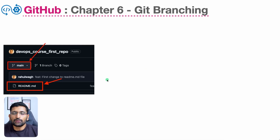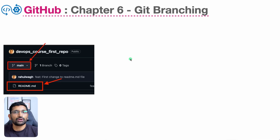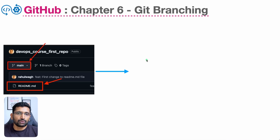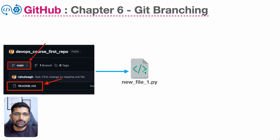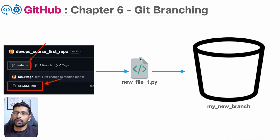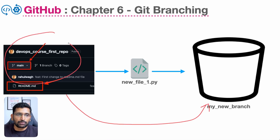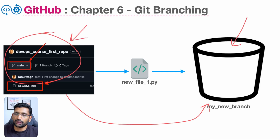The question is: how do you develop and test code on your machine? For that, you create a new branch which is a copy of the main branch. In this new branch you develop and test your code, and it does not make any direct change to the main branch.